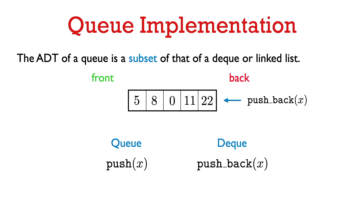The abstract data type for a queue is a subset of that for a deque or a linked list. Let's see why that's the case. Looking at the push function in a queue, that's analogous to push_back in a deque — we just add an element to the end of the deque.